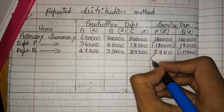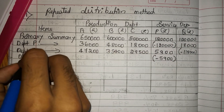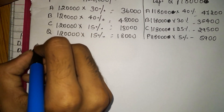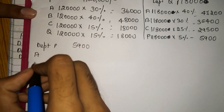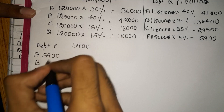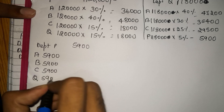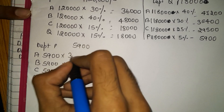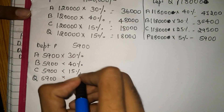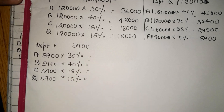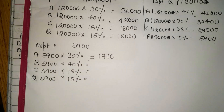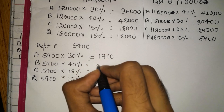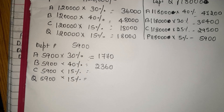Again 5,900 came into P department, so we need to distribute it. Department P now has 5,900 to be distributed among A, B, C, and Q. So: 5,900 into 30% for A; 5,900 into 40% for B; 5,900 into 15% for C; and 5,900 into 15% for Q. Results: 5,900 into 30% = 1,770; 5,900 into 40% = 2,360; 5,900 into 15% = 885; and 5,900 into 15% = 885.